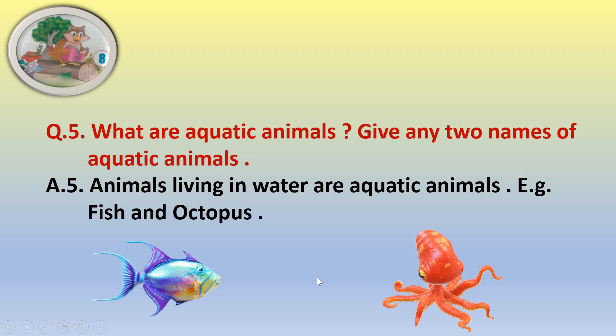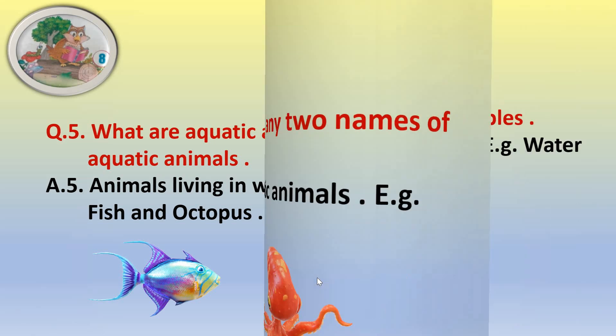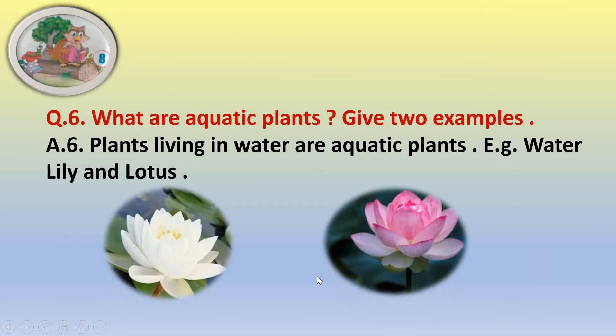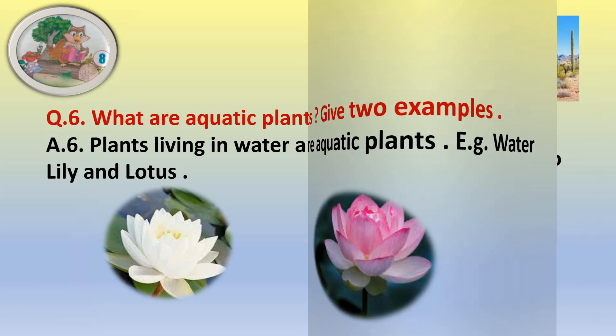Question number six: what are aquatic plants? Give two examples. Plants living in water are aquatic plants. For example, water lily and lotus.